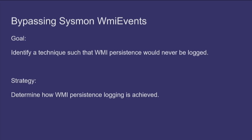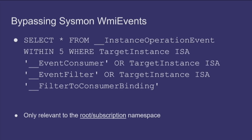Let's talk about the WMI event type in Sysmon. Our goal is to identify techniques such that WMI persistence would never be logged in the first place — we want to bypass the ability for Sysmon to collect that data. Our strategy is simple: figure out how WMI persistence is actually being achieved within the code. This didn't require much reverse engineering — I literally just ran strings on Sysmon and saw that the implementation of WMI persistence detection is a WQL query specific to the root\subscription namespace.